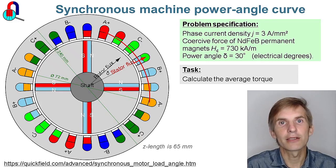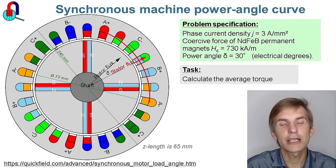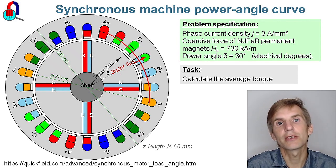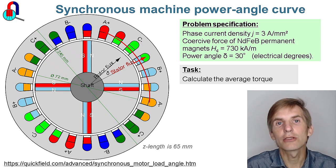Synchronous machine power angle curve. The power angle is measured between the rotor pole direction and the stator magnetic field direction. If the angle is zero, then the torque is zero.